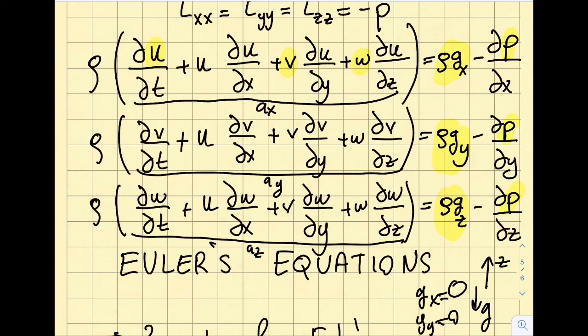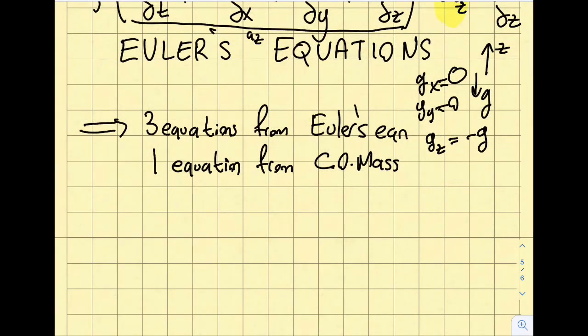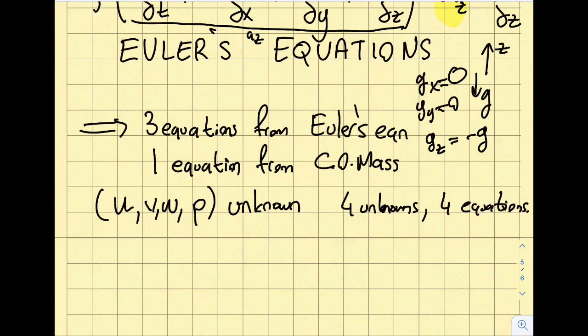I have u, v, w, and p unknown - four unknowns. I obtained four equations, four unknowns. That's the power of this analysis. I should be able to solve inviscid equations for any case as long as I have the boundary conditions and initial conditions supplied to me.